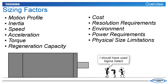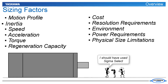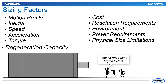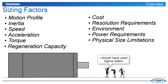Some of the factors that determine the best motor are listed here. The motion profile, along with the system inertia, determine the speeds, accelerations, and torques that the motor must be able to produce. Regeneration capacity must also be considered. These factors must be balanced against others,